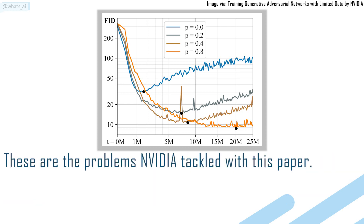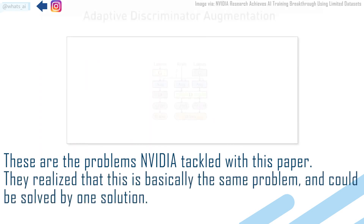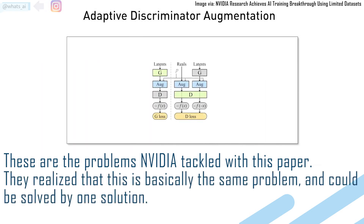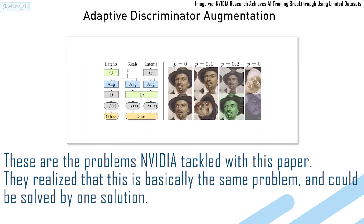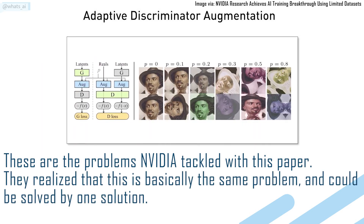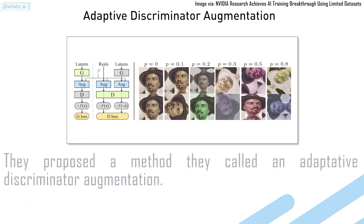These are the problems NVIDIA tackled with this paper. They realized that this is basically the same problem and could be solved by one solution. They proposed a method they called adaptive discriminator augmentation.